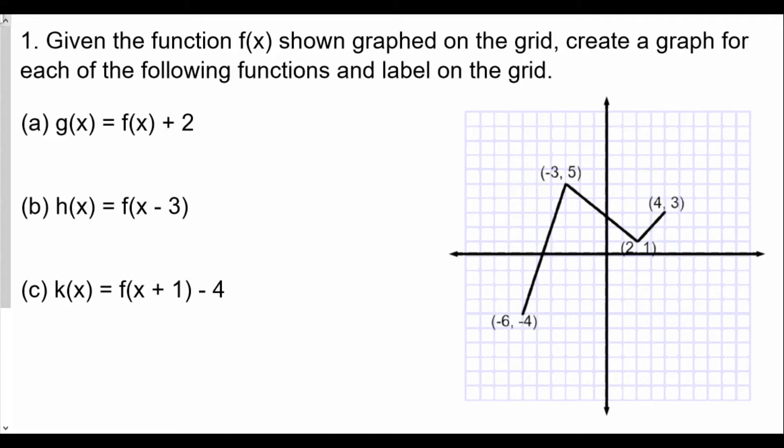Given the function f(x) shown graphed on the grid, create a graph for each of the following functions and label on the grid. So we have three different examples here. We have g(x) is f(x) plus 2, h(x) is f(x) minus 3, and k(x) is f(x) plus 1 minus 4.